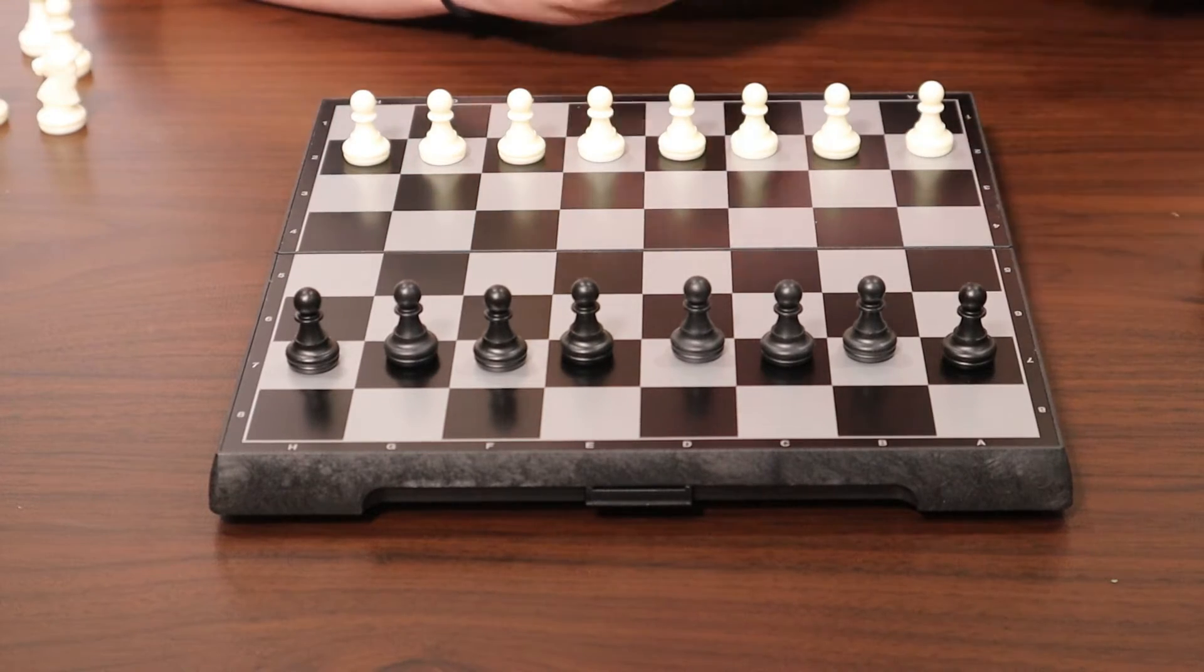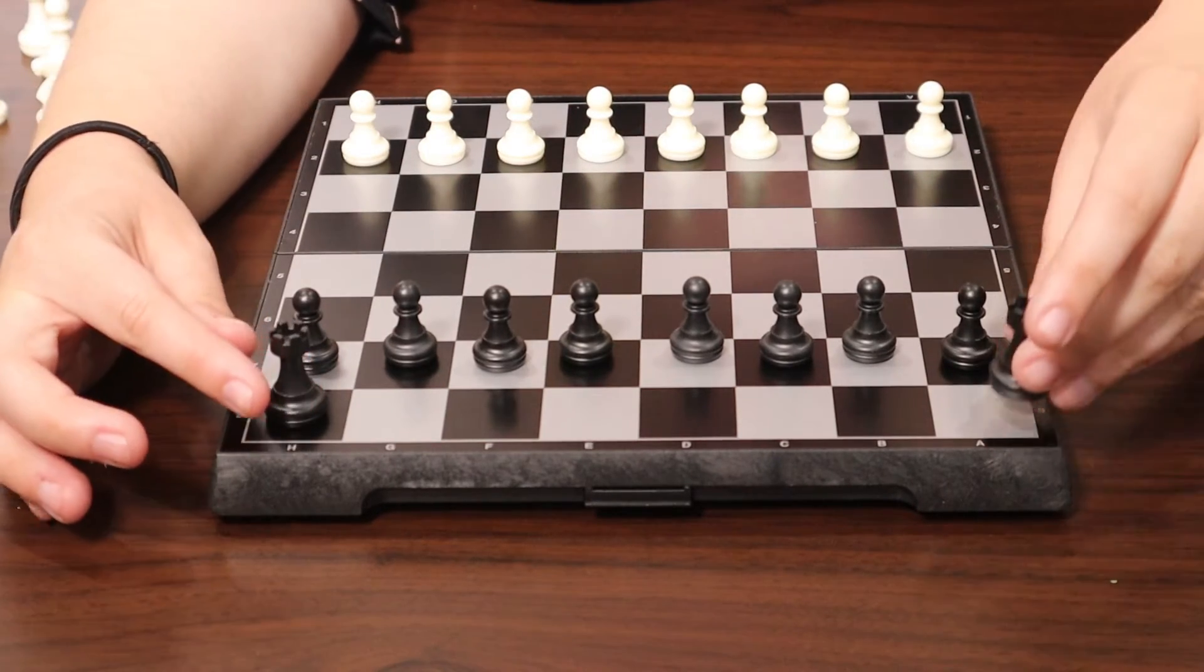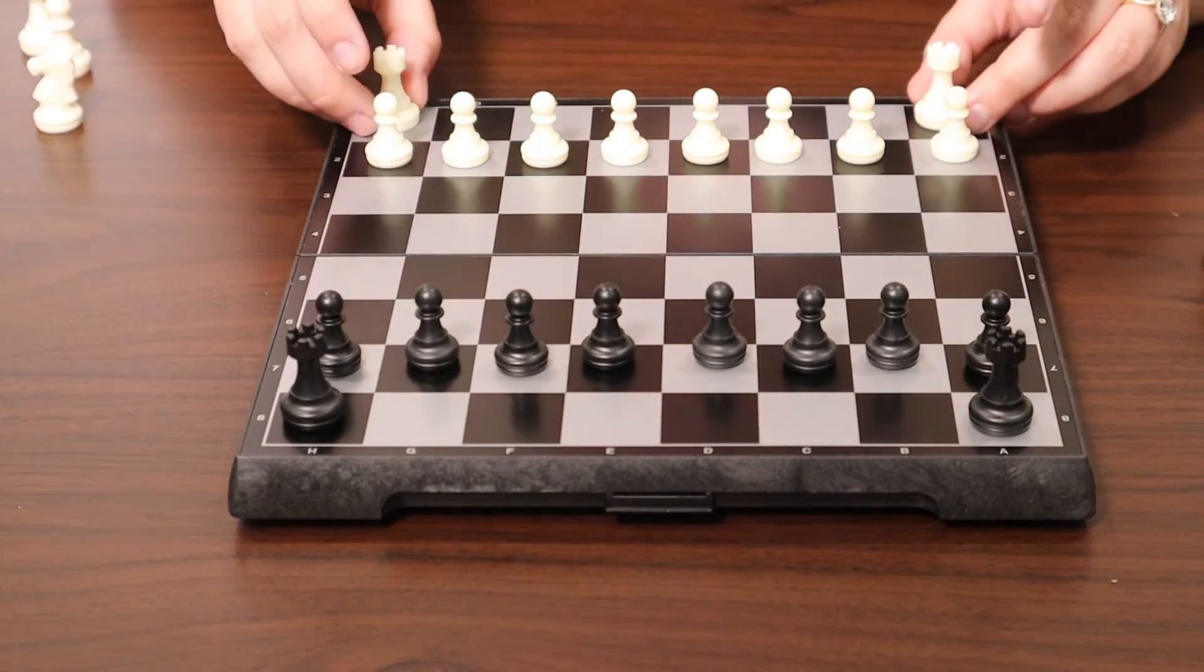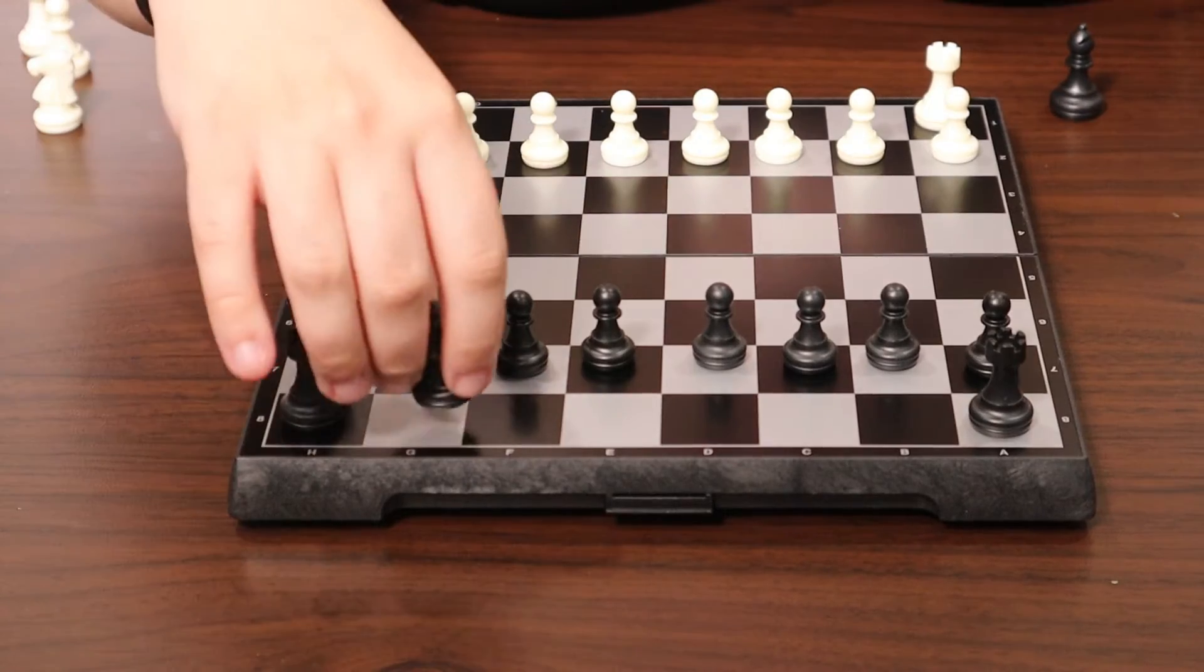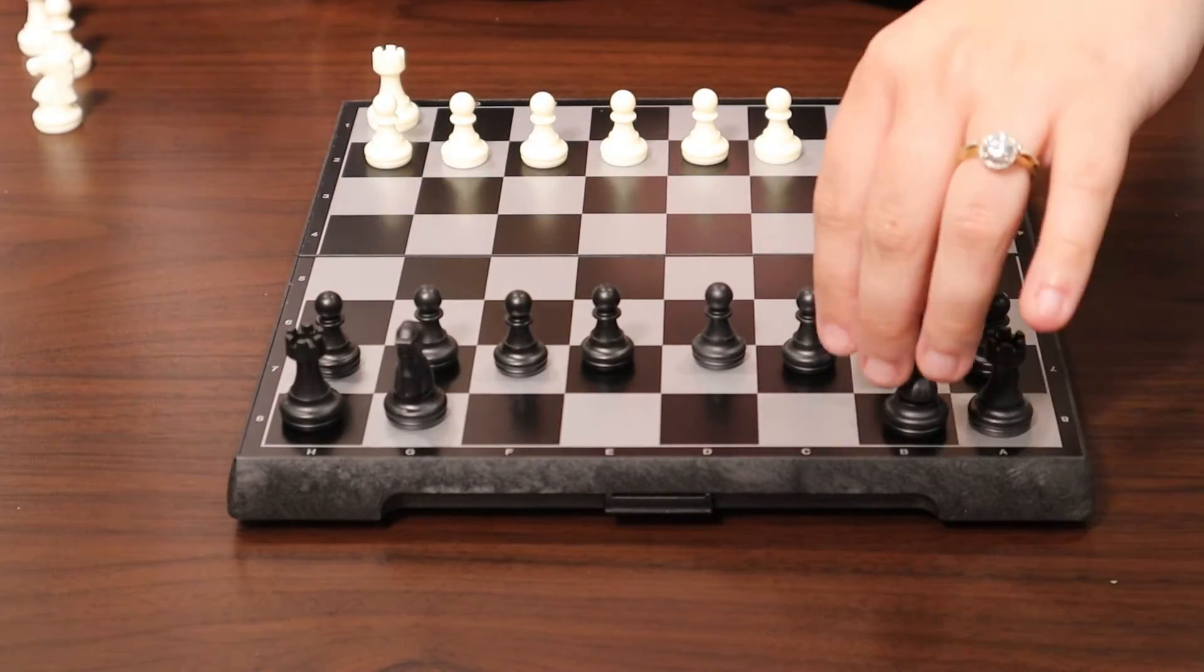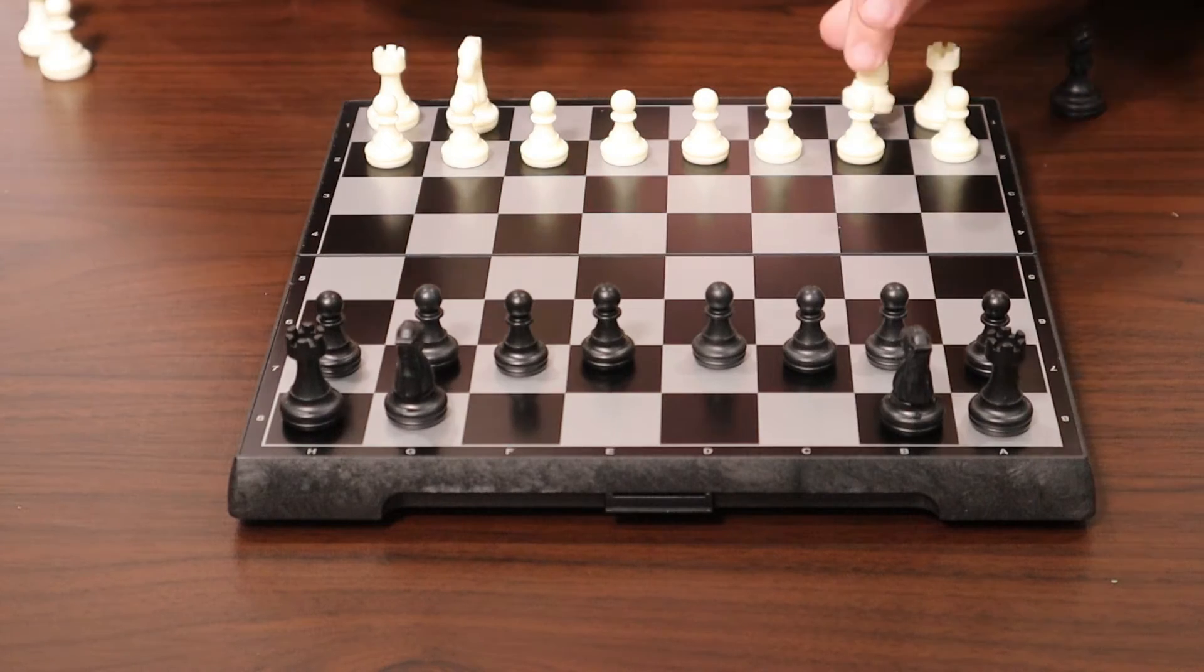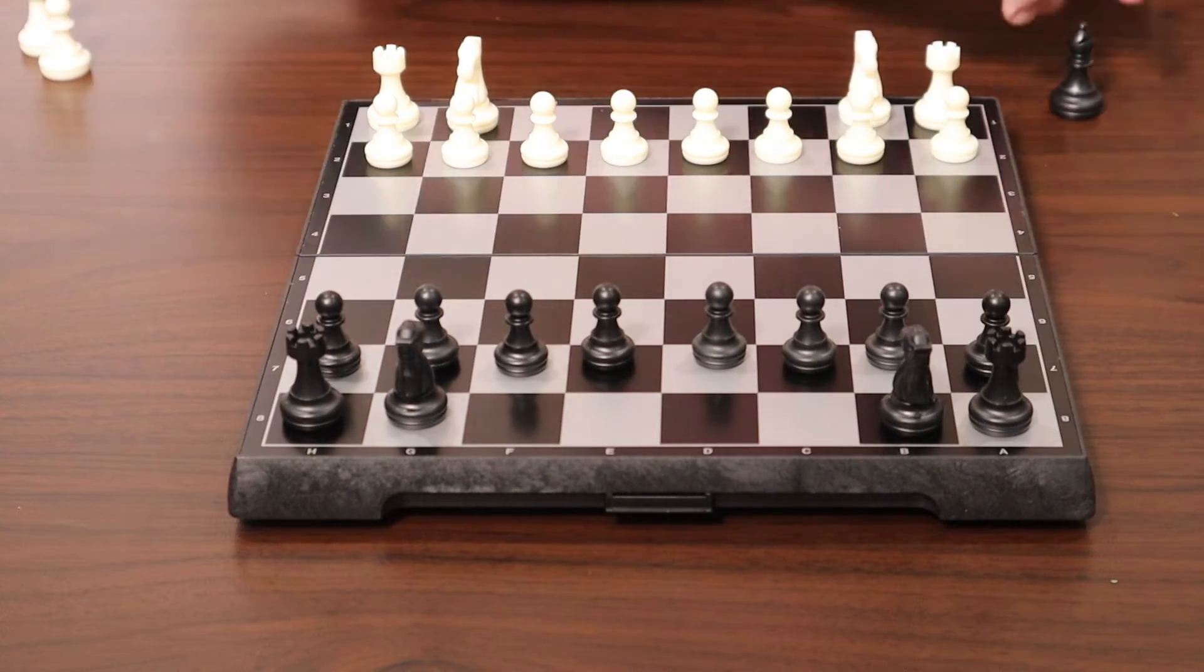So after your row of pawns, your rooks go on the outside edges. Next to the rooks go the knights, and then the bishops.